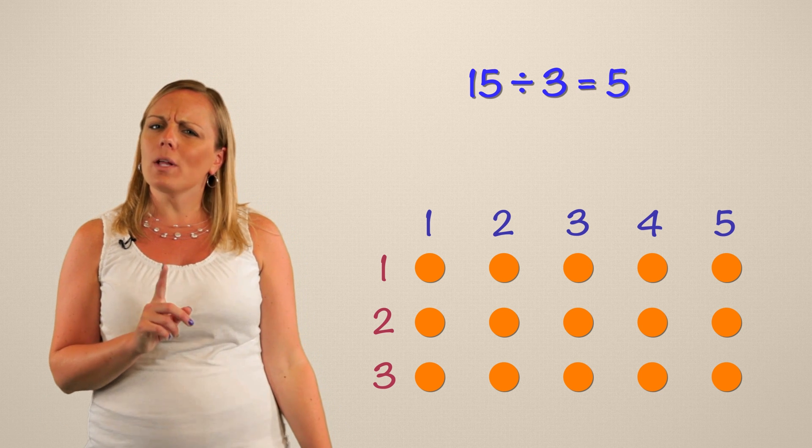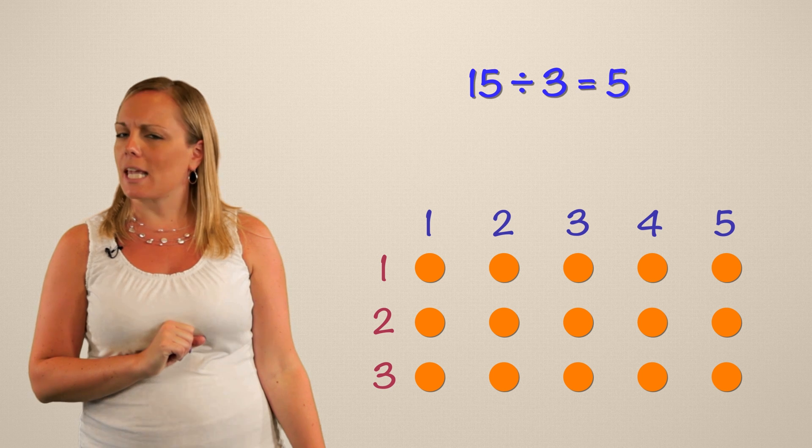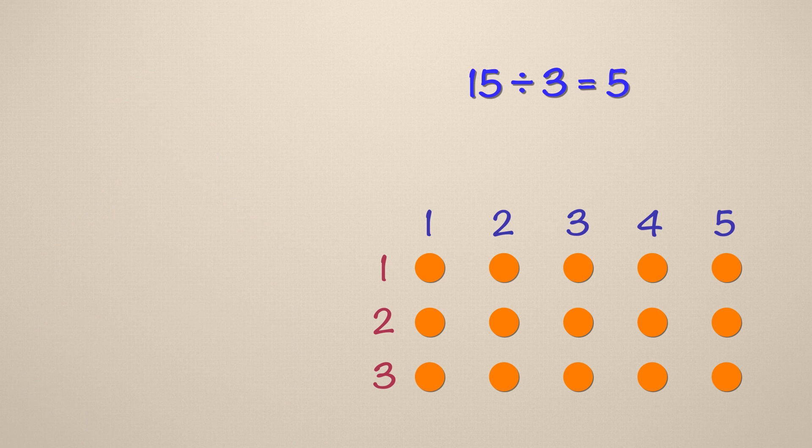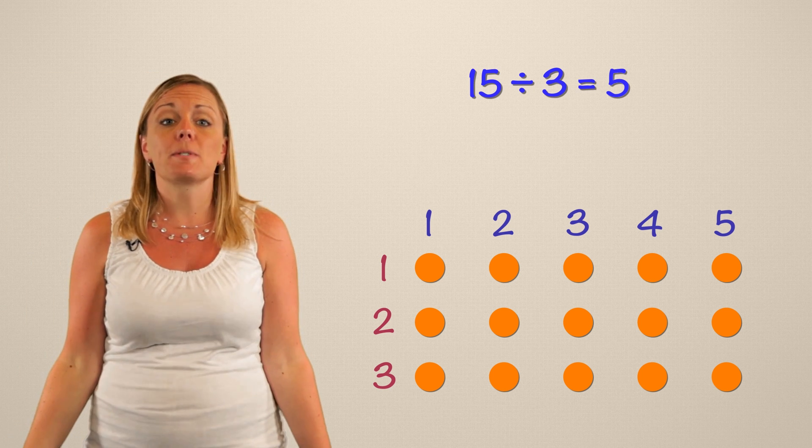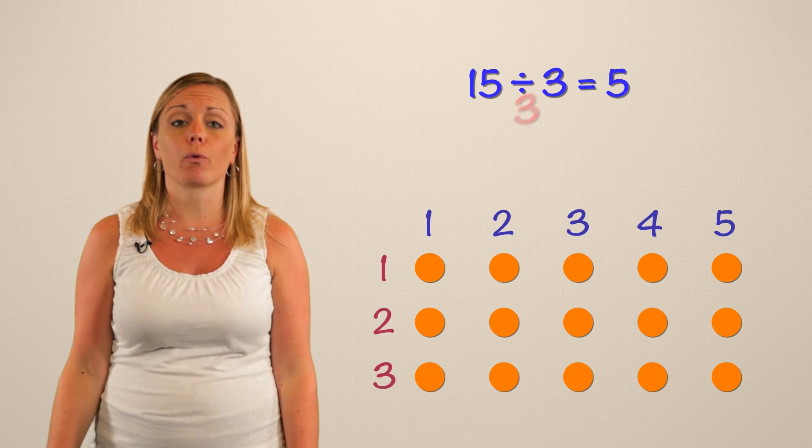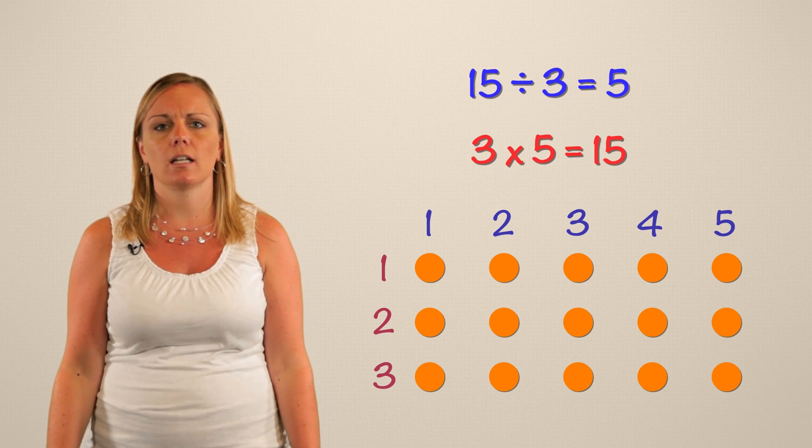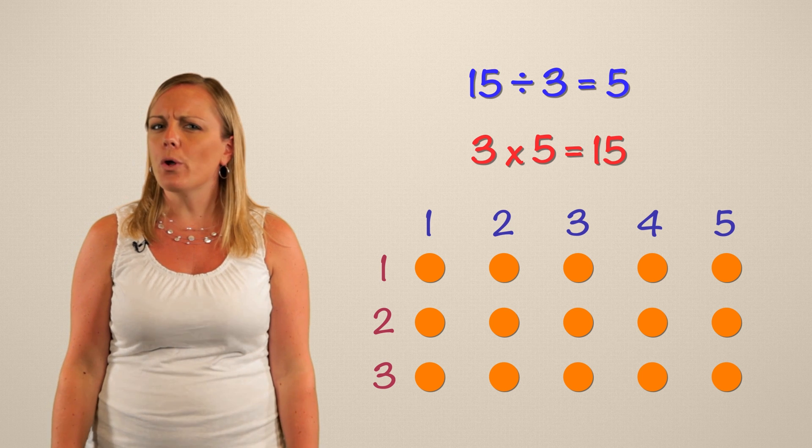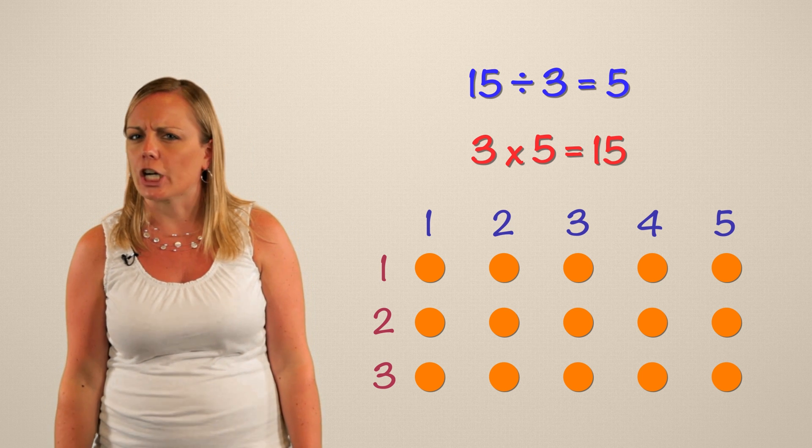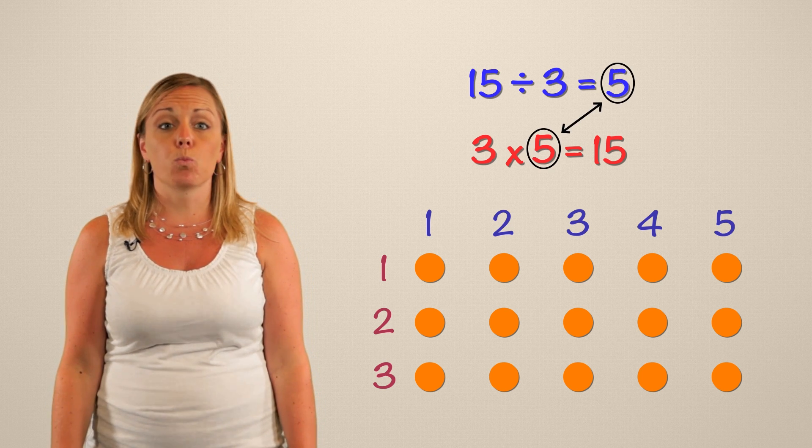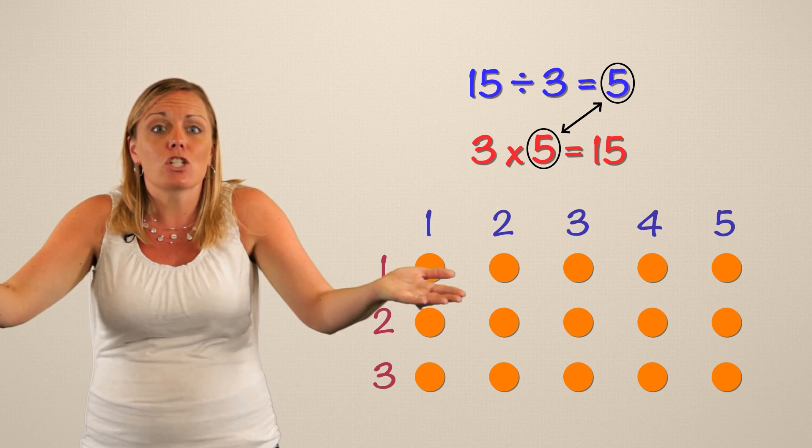But what would this look like as a multiplication sentence? We have three groups of five. So three times five equals our total 15. Now what do you notice about our quotient here? It's one of the factors in our multiplication problem.